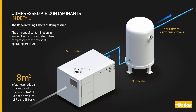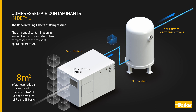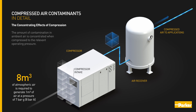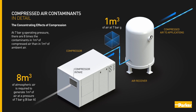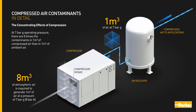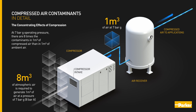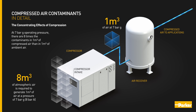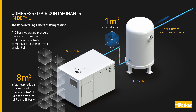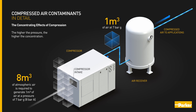The amount of contamination in ambient air is concentrated when compressed to the relevant operating pressure. At 7 bar g operating pressure, there are 8 times the contaminants in 1 cubic metre of compressed air than in 1 cubic metre of ambient air. The higher the pressure, the higher the concentration.